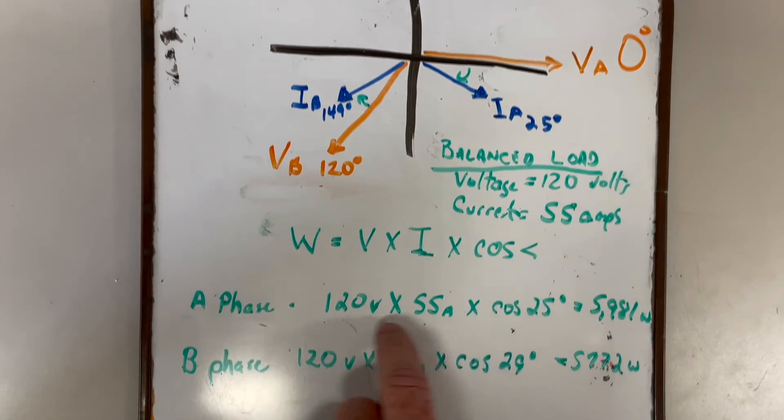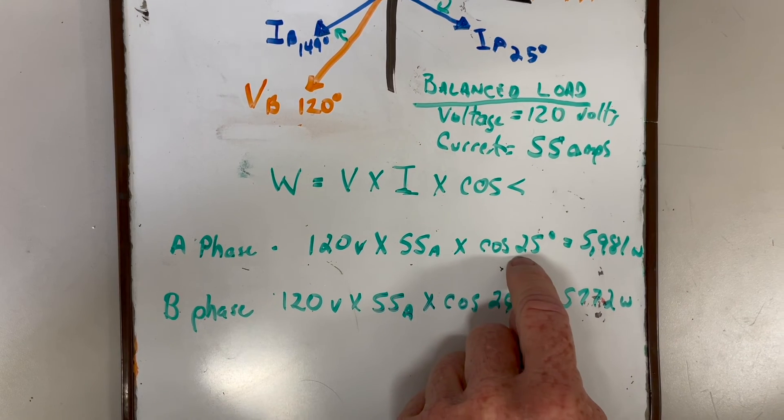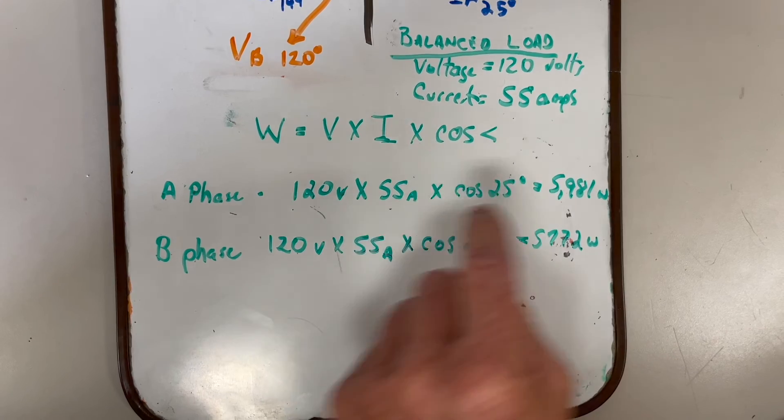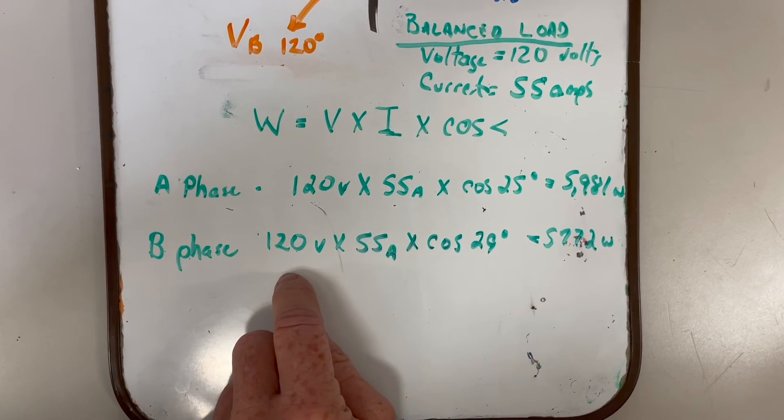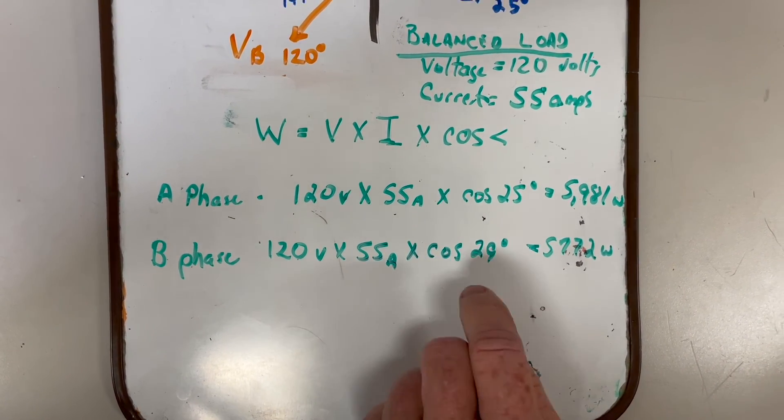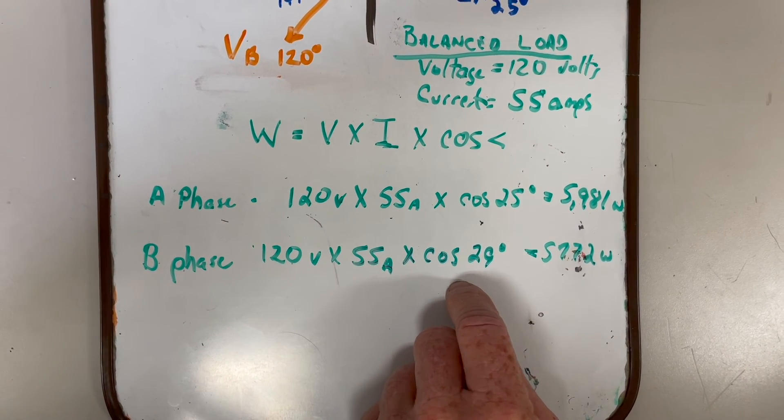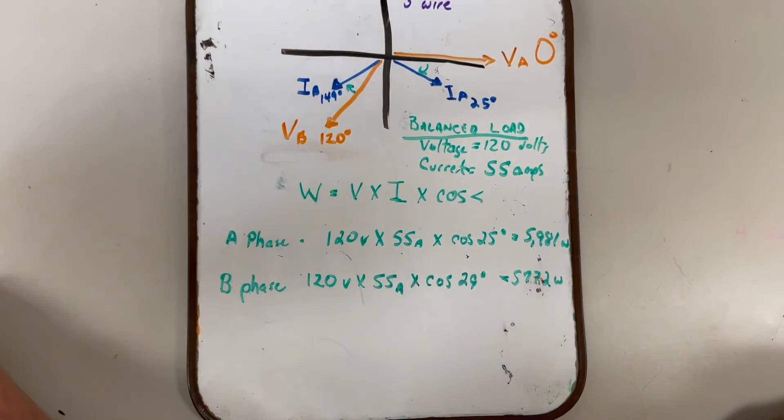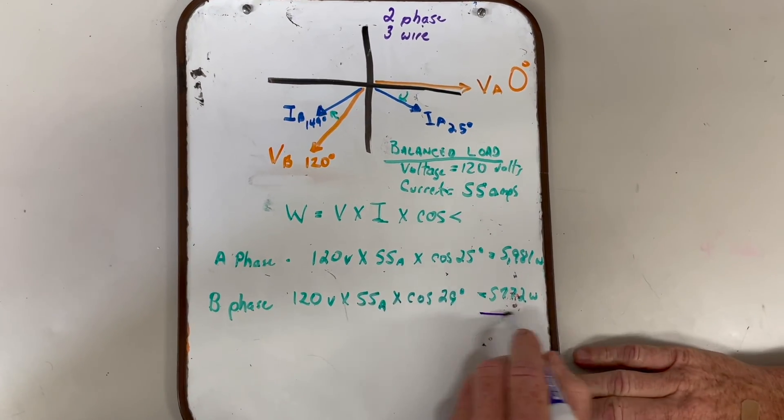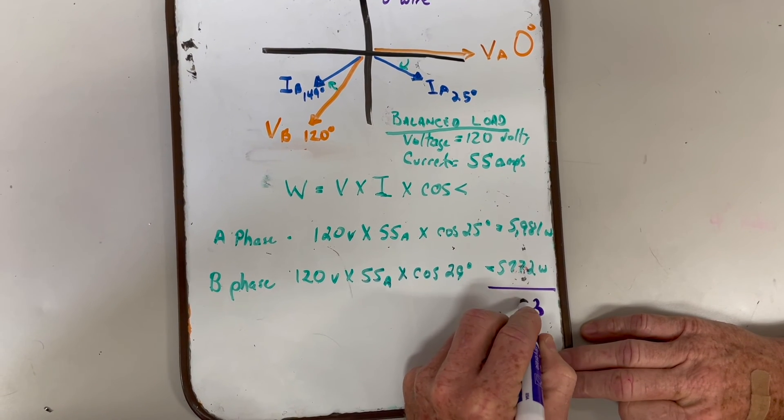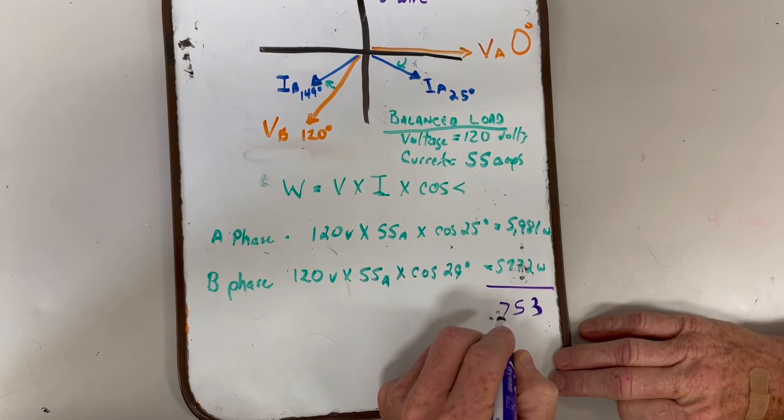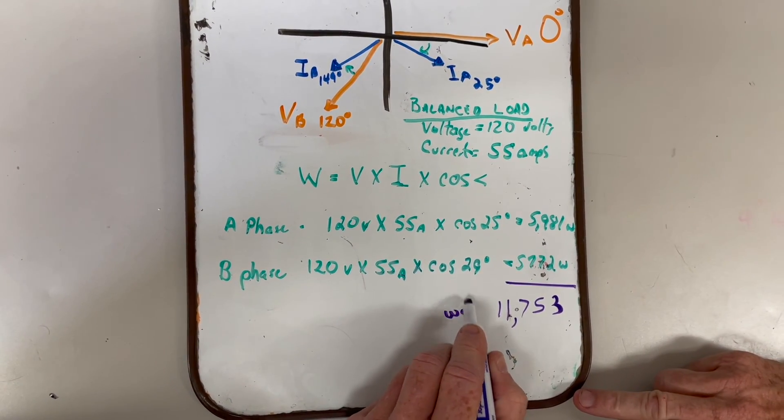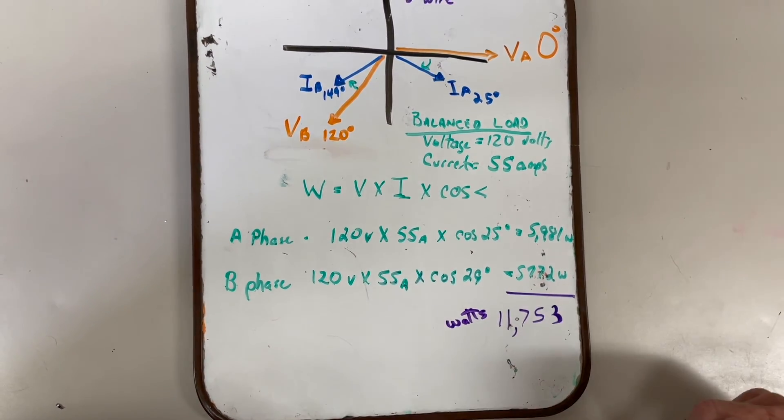So what we wanted to figure was the watts. What we do is for A phase we take 120 volts times 55 amps times cosine of the angle and we got 5,981 watts. For B phase we take the 120 volts, multiply times the 55 amps, and times the cosine of 29 degrees and here we get 5,772 watts. So we could total this up and we'll get 11,753 watts total power being used at this site.